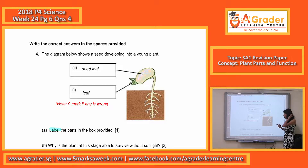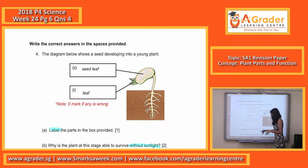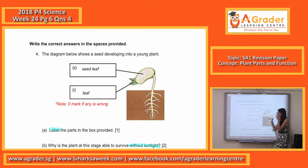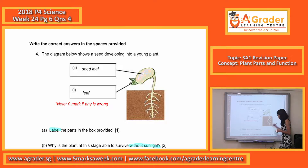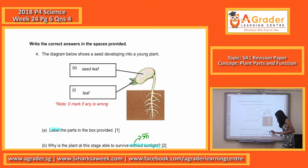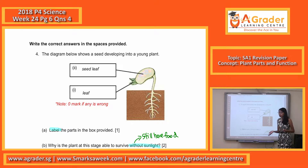Let's look at part B: Why is the plant at this stage able to survive without sunlight? This diagram shows a pretty young plant that still has the seed leaf. You have to remember that when it can survive without sunlight, it means it will still have food. Basically, you have to tell where it gets the food from.